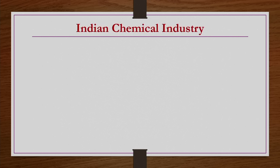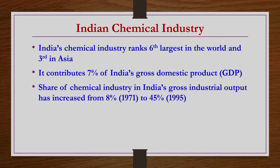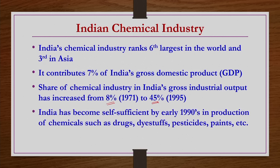If you look at the statistics of Indian chemical industry and its position worldwide, you will be surprised to know that Indian chemical industry is very huge and it ranks sixth largest in the world and third in Asia. In terms of GDP, it contributes 7 percent of India's gross domestic product. The share of chemical industry in India's gross industrial output was only 8 percent in 1971, which grew to 45 percent in 1995. By early 1990s, India became self-sufficient in production of many chemicals such as drugs, dye stuffs, pesticides, paints, etc. However, until now India is not self-sufficient in production of several chemicals like oils, petrol, diesel, etc., because of the lack of resources but not because of lack of technology.